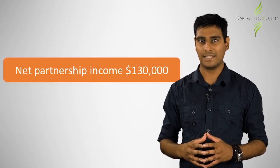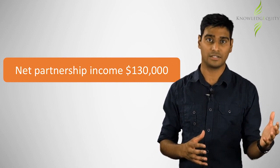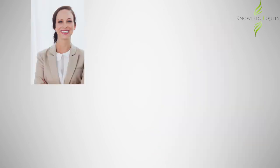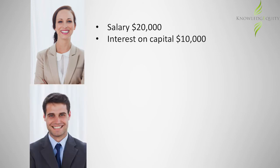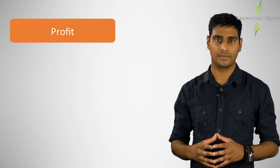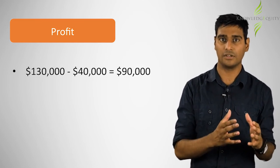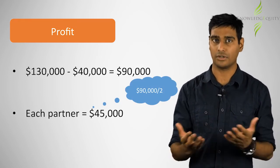The partnership's net income is $130,000, and the non-deductible items of partner salary and interest on capital are distributed from this. Alice receives $20,000 salary and $10,000 interest on capital contribution, and Bill receives $10,000 interest on capital — totalling $40,000. After paying these, there is $130,000 less $40,000, or $90,000 of profit available, which is then distributed evenly as $45,000 each.